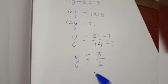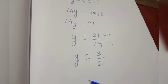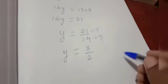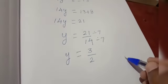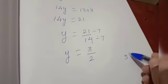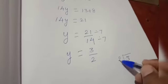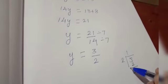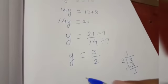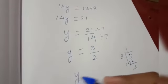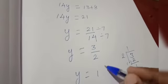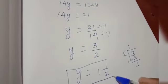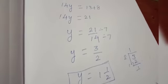This is improper. We can convert into a mixed fraction. If we convert into a mixed fraction: 1 two is 2, remainder 1. So y is equal to 1 and 1 by 2. This is the answer for y.